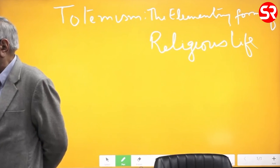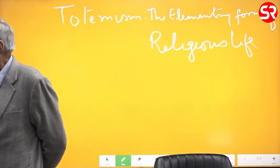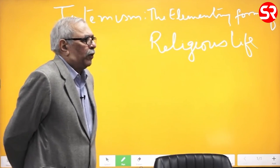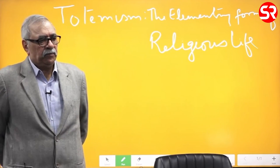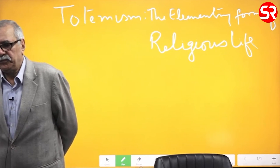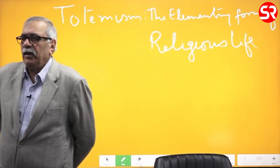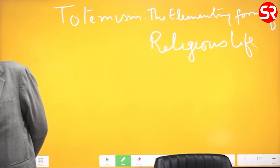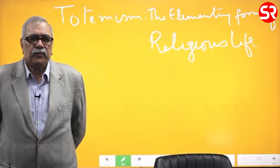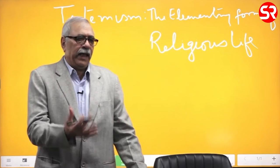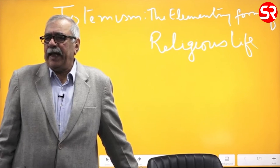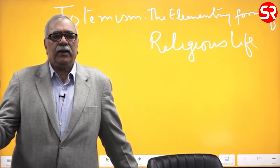Totemism is a type of religious practice. It is the worship of an object which is considered the totem. The object may be animate or inanimate — that means it may have life or may not have life. It may be an animal, it could be a tree, it could be a rock, it could be anything.